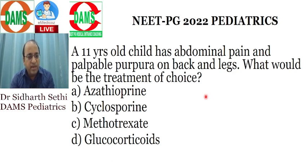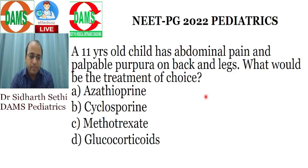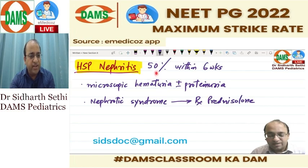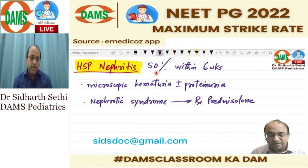In every class of mine I always discuss HSP and Kawasaki's as very important topics. Here is another question on Henoch-Schönlein Purpura — since 2015, every exam has had a question on HSP. HSP is the most common vasculitis in children and the most common small vessel vasculitis in children.